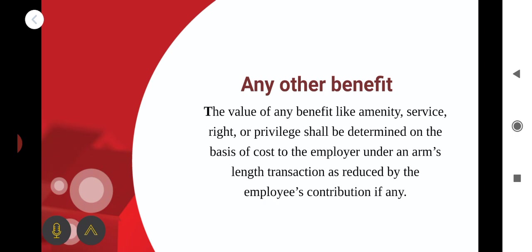Any other benefit provided by an employer to the employee for his benefit is considered as a perquisite value. The value of such benefits — like amenities, service, rights or privileges — shall be determined on the basis of the cost to the employer under an arm's length transaction, reduced by the employee's contribution if any. These are all the important perquisites taxable in the hands of all employees.